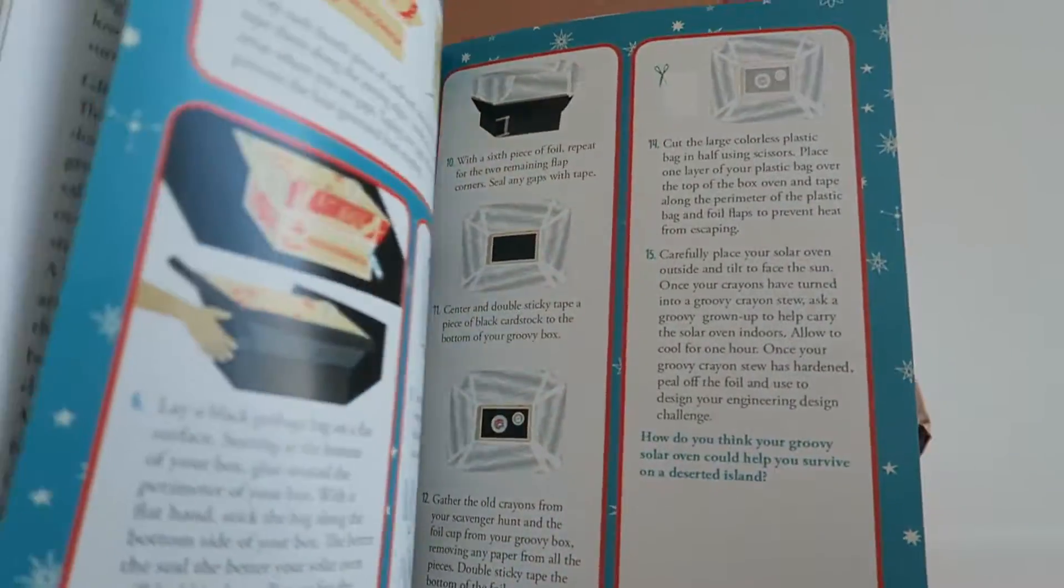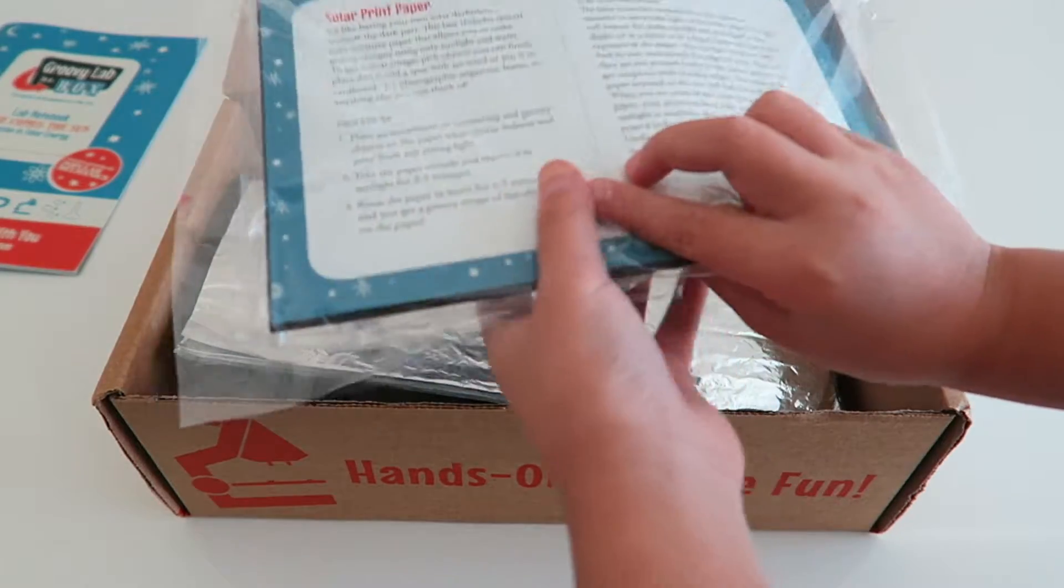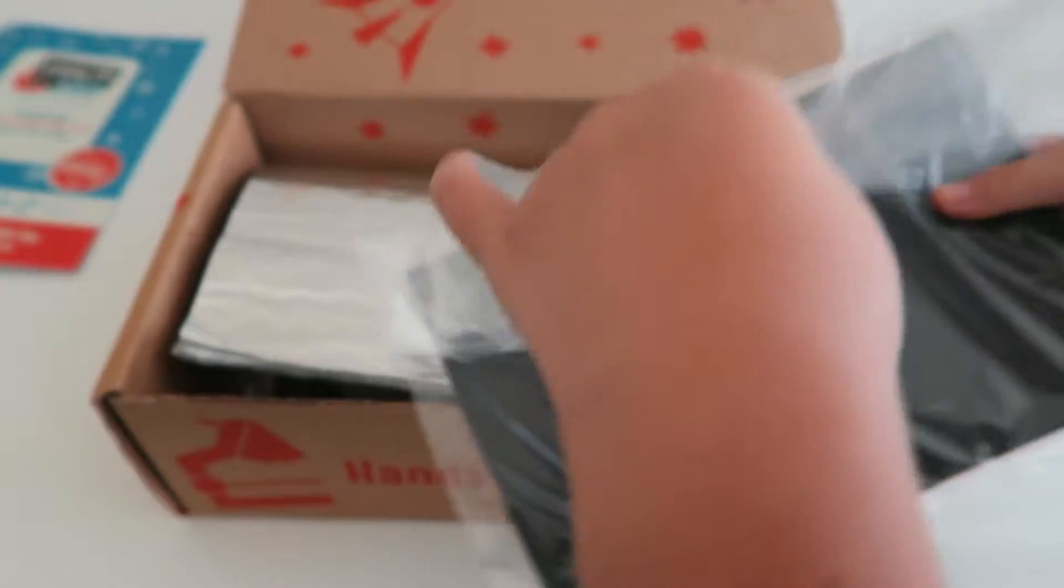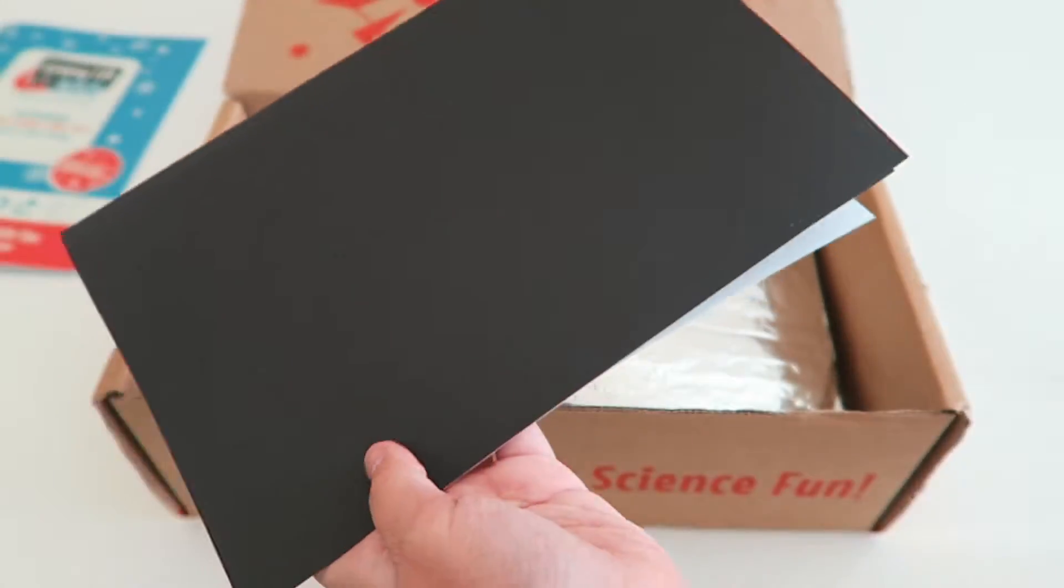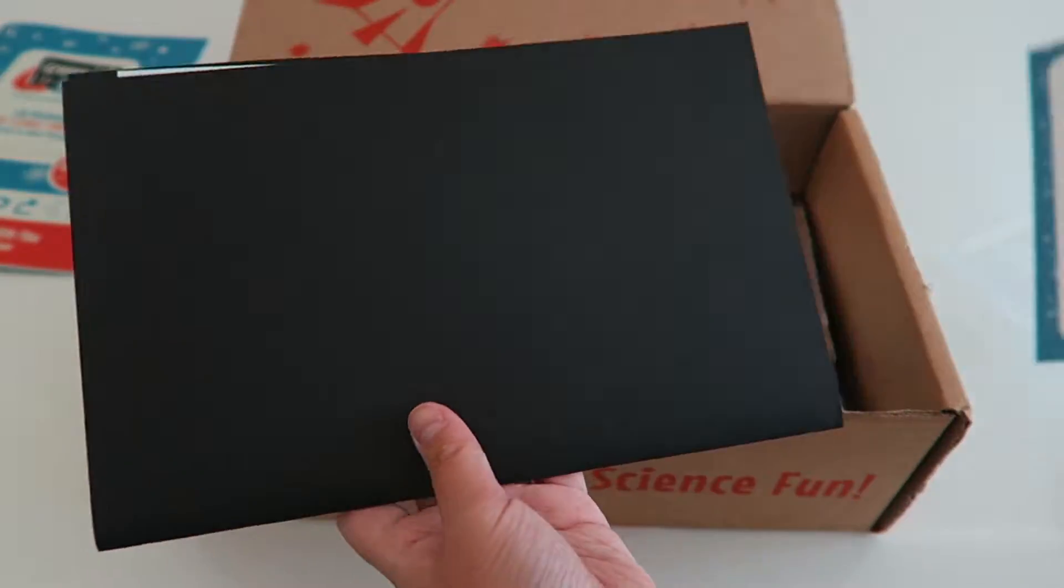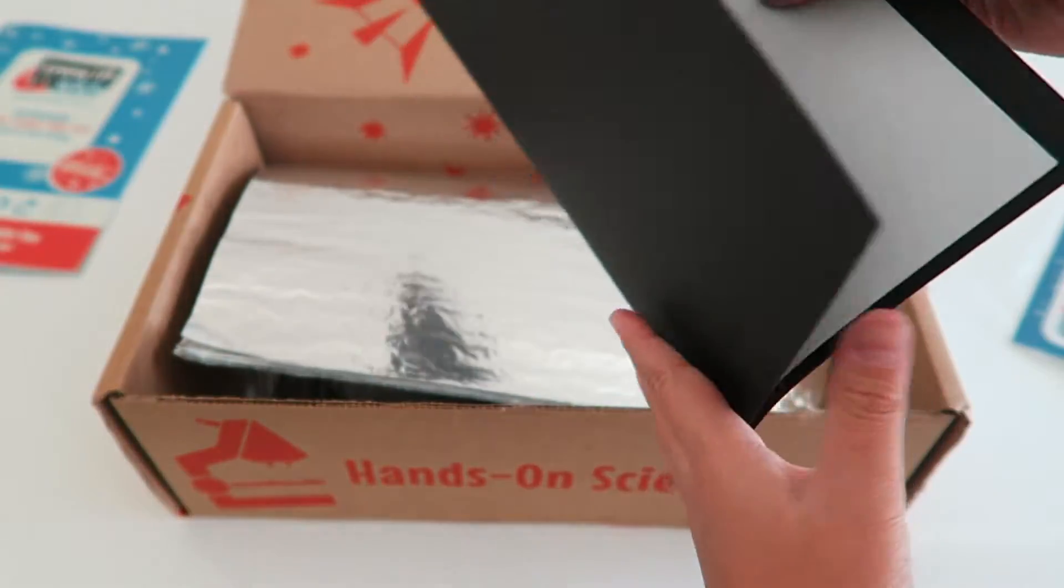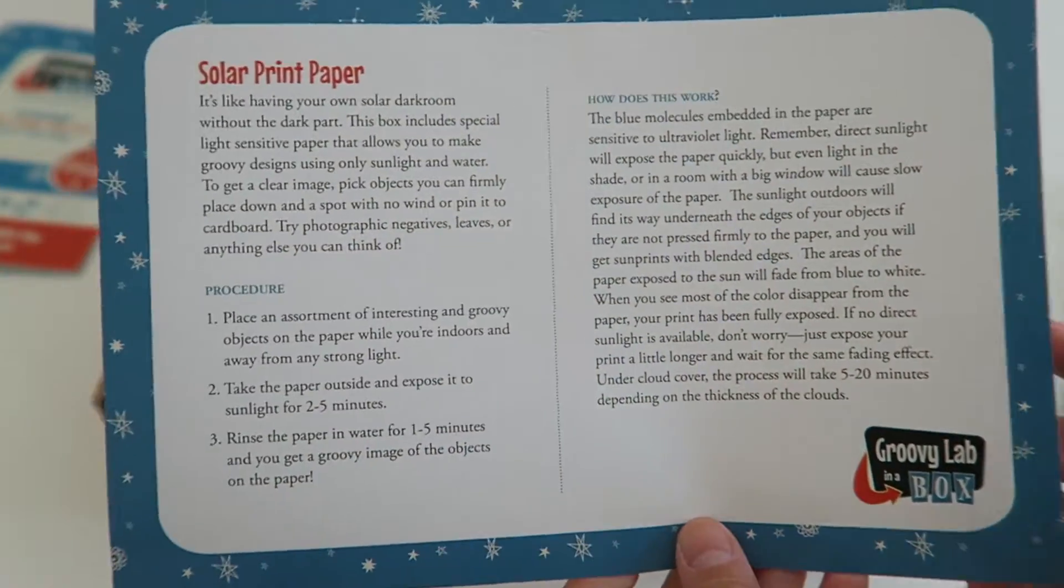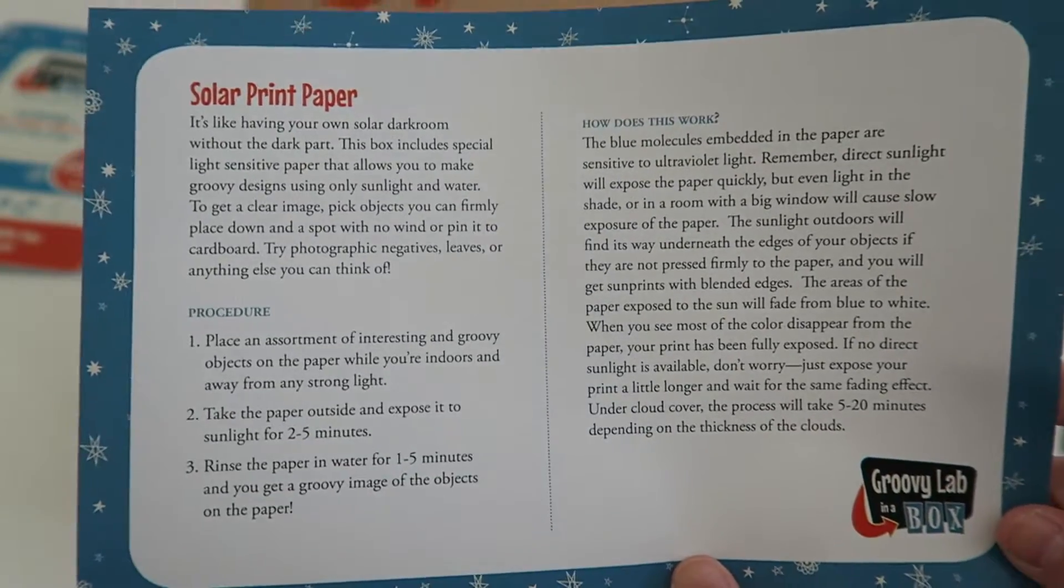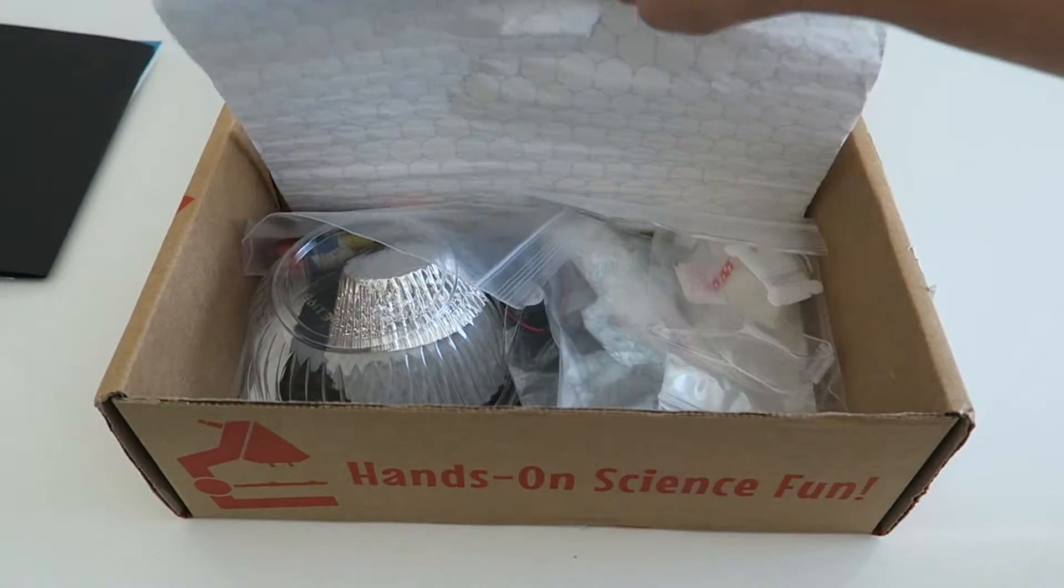Here it is. The next thing we have is solar print paper. So here it is. So it comes with this note, just tells you what you're going to be doing with the solar print paper.